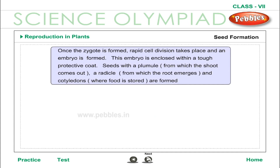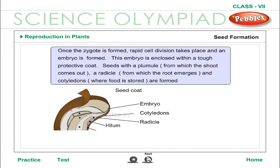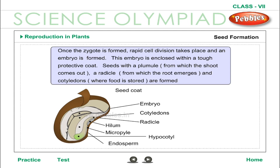Seed Formation: Once the zygote is formed, rapid cell division takes place and an embryo is formed. This embryo is enclosed within a tough protective coat. Seeds contain a plumule from which the shoot comes out, a radicle from which the root emerges, and cotyledons where food is stored.